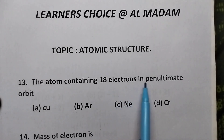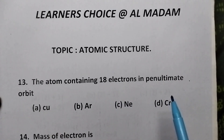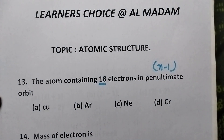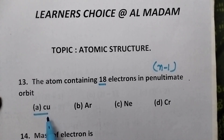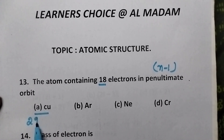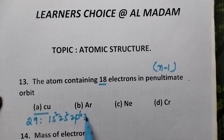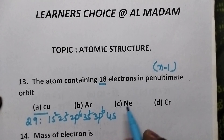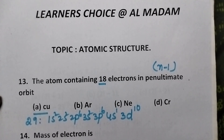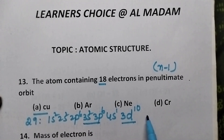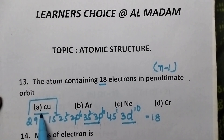The atom containing 18 electrons in the penultimate orbit is — N is the outermost orbit, penultimate orbit means N minus 1. Coming to option A, that is copper, its atomic number is 29 and its configuration is 1s2, 2s2, 2p6, 3s2, 3p6, 4s1, 3d10. The third orbit is the penultimate shell: 3d10, 3p6, 3s2 — altogether 18 electrons are present. Hence option A, copper, is the right answer.